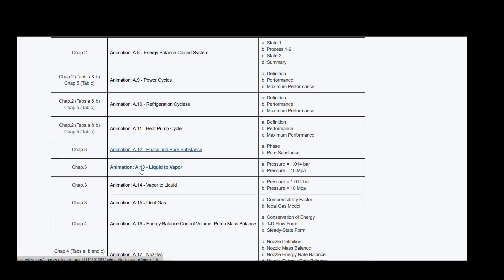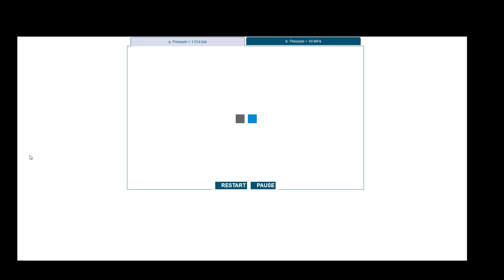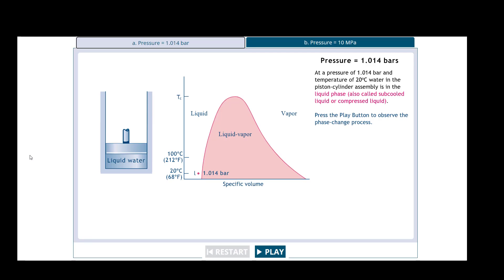Let's look at the next ones which are going to be liquid to vapor and vapor to liquid, and then we're going to end it at ideal gas. This talks about at a pressure of 1.014 bar and then a temperature of 20 degrees Celsius. Remember we went over the PVT diagram, and so we have T on this y-axis and specific volume on the x-axis. This line right here is going to be the pressure.